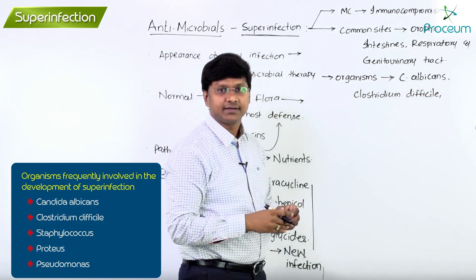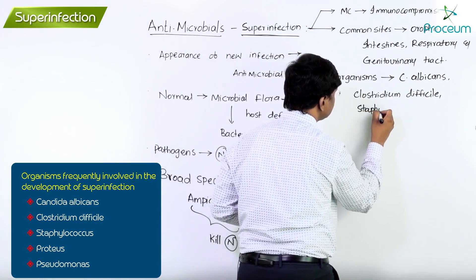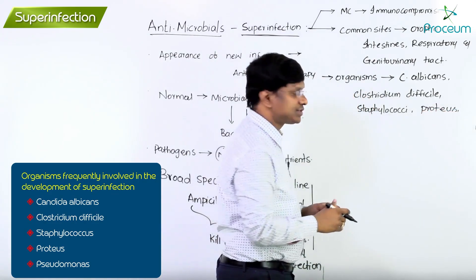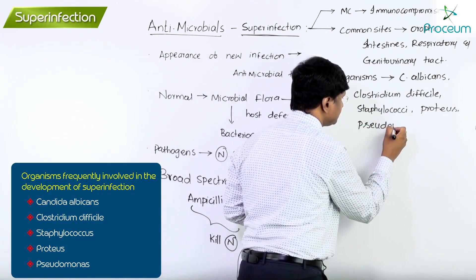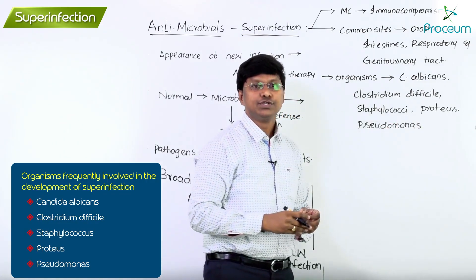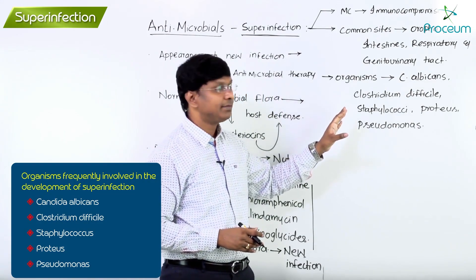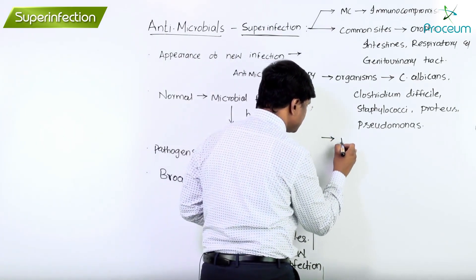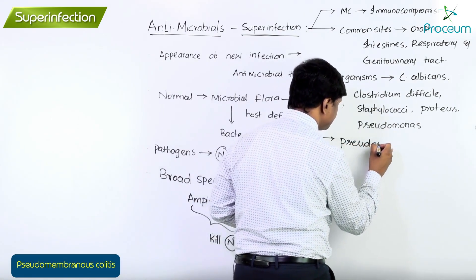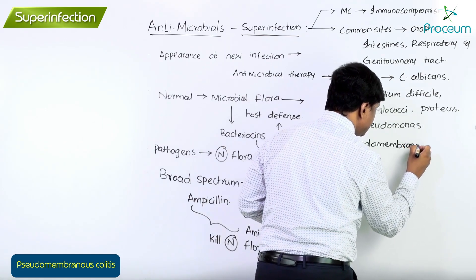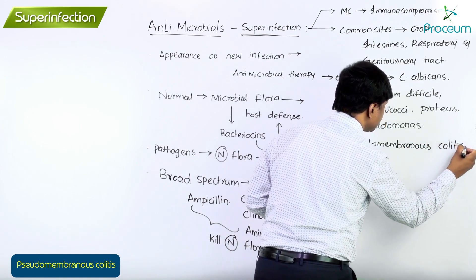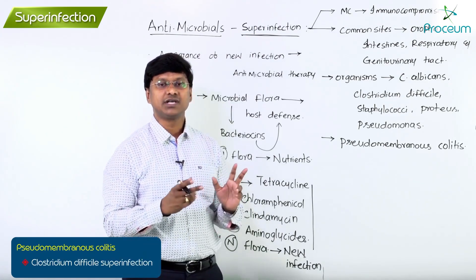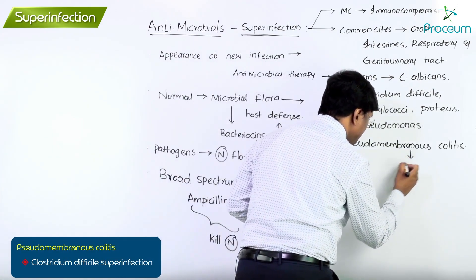The organisms frequently involved in superinfection are Clostridium difficile, Staphylococci, Proteus, and Pseudomonas. We have an entity called pseudomembranous colitis. This pseudomembranous colitis results from Clostridium difficile superinfection.